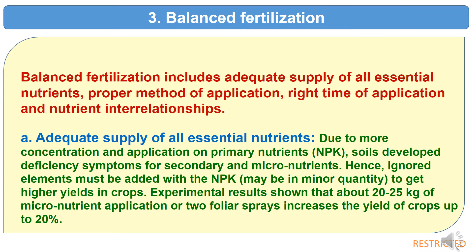The third measure for improving fertilizer use efficiency is balanced fertilization. Balanced fertilization includes adequate supply of all essential nutrients, proper method of application, right time of application, and consideration of nutrient interrelationships.